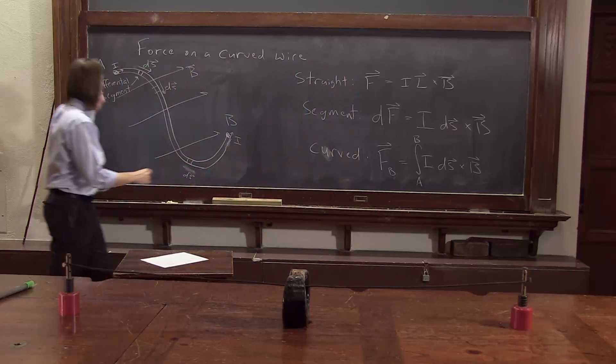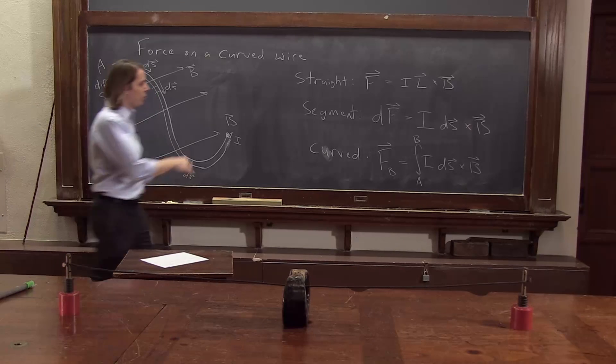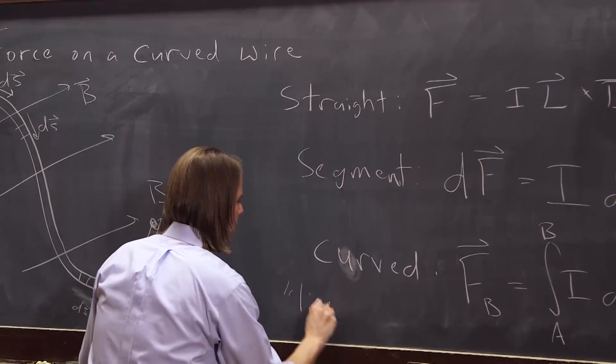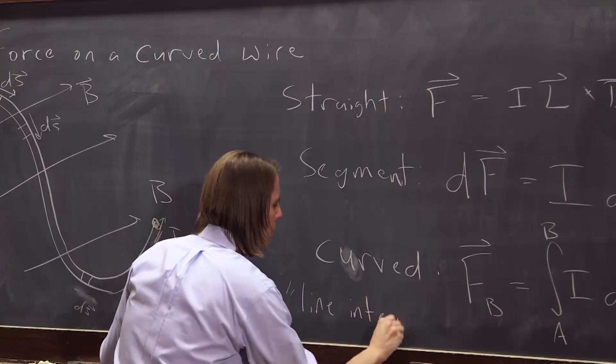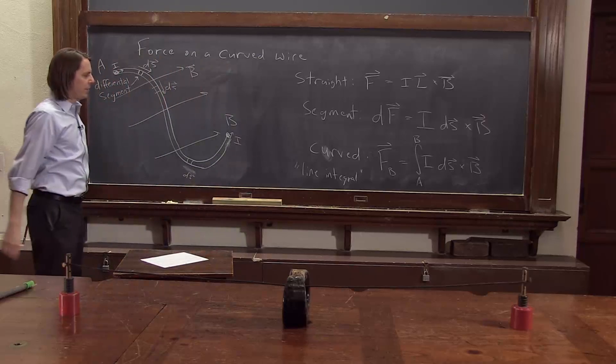So those limits are where you follow, from what point on the wire to what other point on the wire. So when you integrate along a line like that, it's called a line integral. It has several other names, contour integral, line integral, whatever you want to call it.